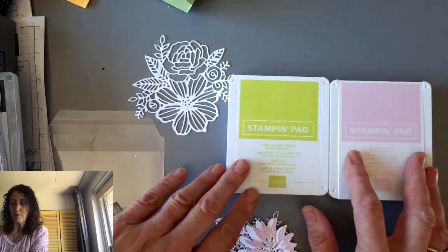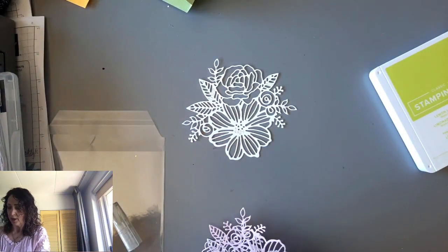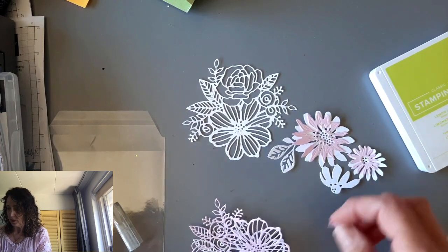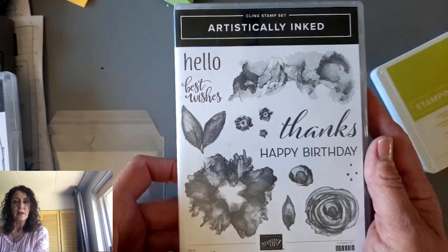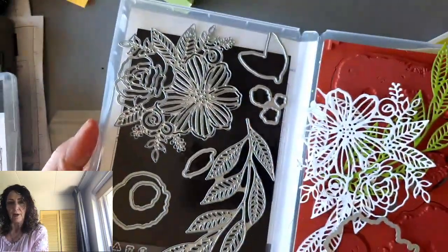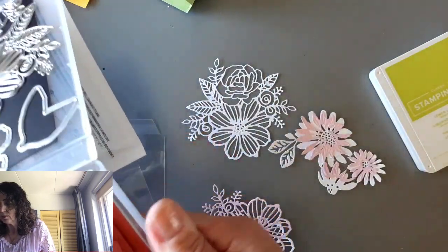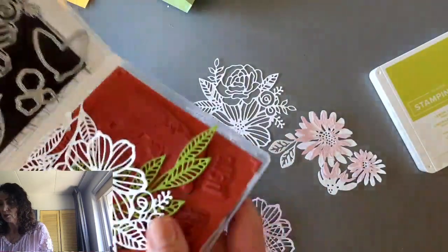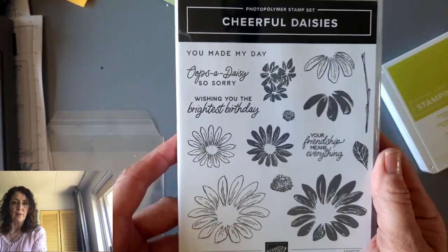We're going to be using lemon lime twist and bubble bath, two beautiful new colors. We're going to be using this die and these dies right here. We're going to layer this and this and this. It's going to look much prettier when I'm done with it. So this die here is from Artistically Inked, and thankfully this carried over. I always tuck this in the back.